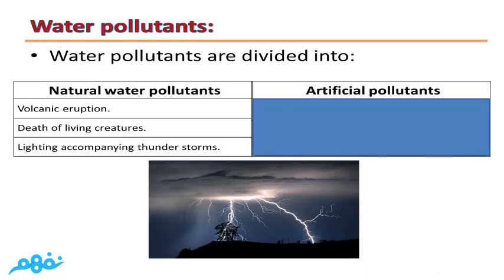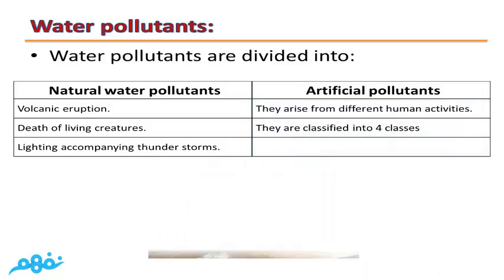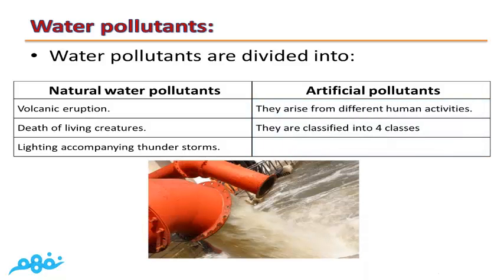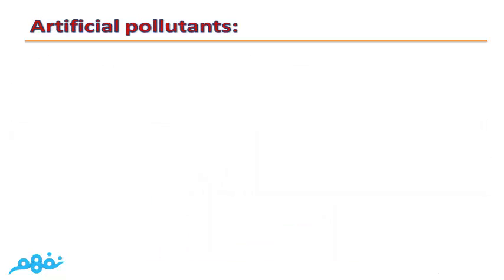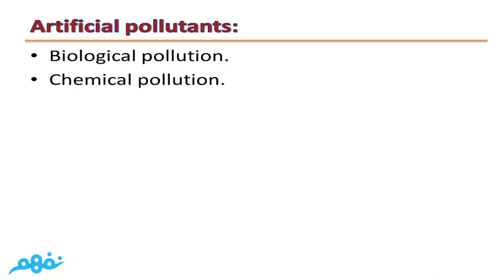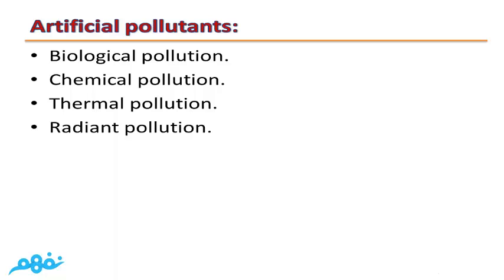Artificial pollutants arise from different human activities and are classified into four groups: biological pollution, chemical pollution, thermal pollution, and radiant pollution.